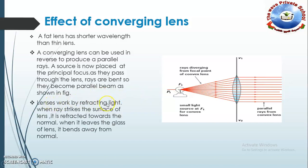Lenses work on the principle of refraction. Refraction is the process in which when light enters from one medium to another medium, it changes its direction. The same phenomenon occurs here — when light moves from air to glass it changes direction. When rays strike the surface of the lens, they are refracted towards the normal. When light leaves the glass of the lens, it bends away from the normal. Lenses work on this phenomenon of refraction.